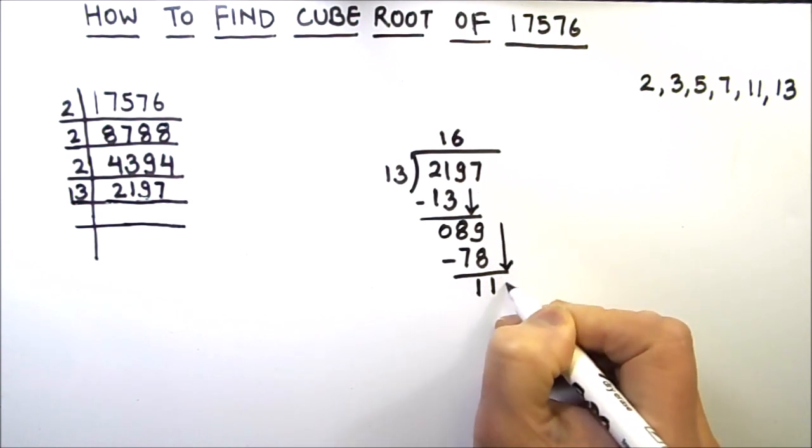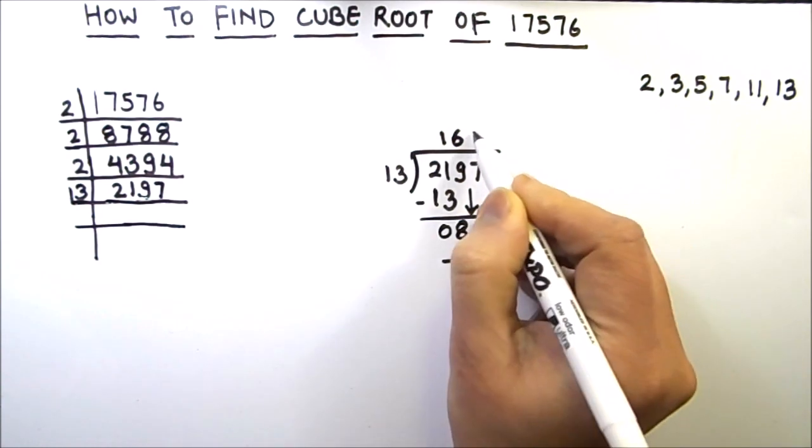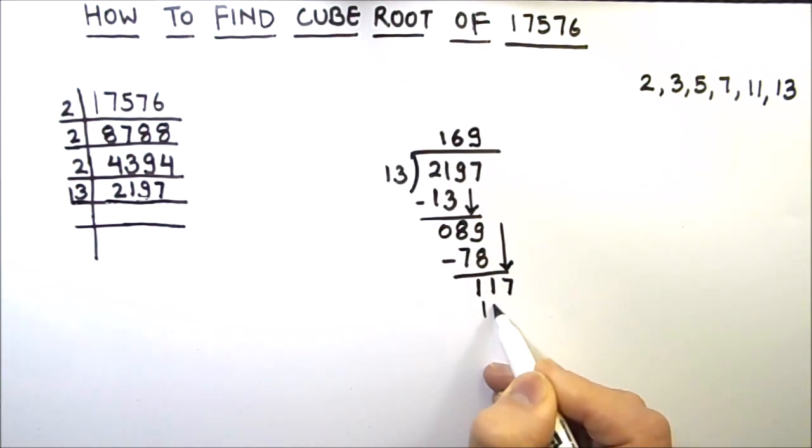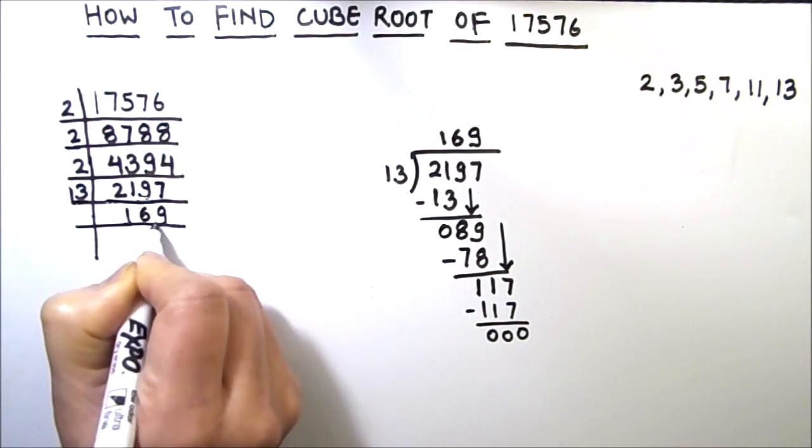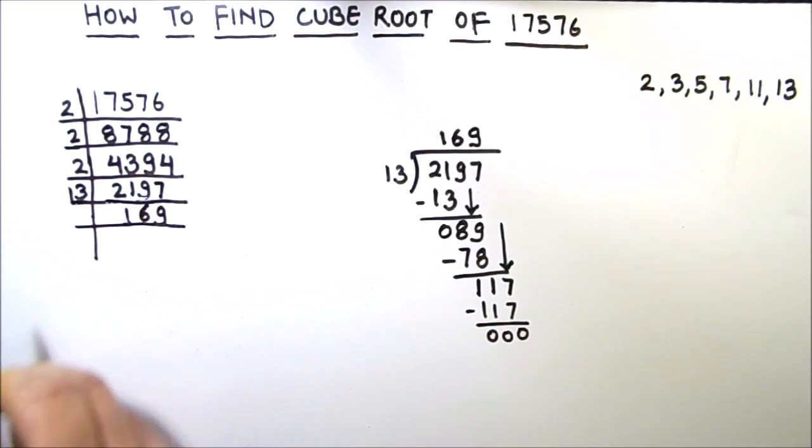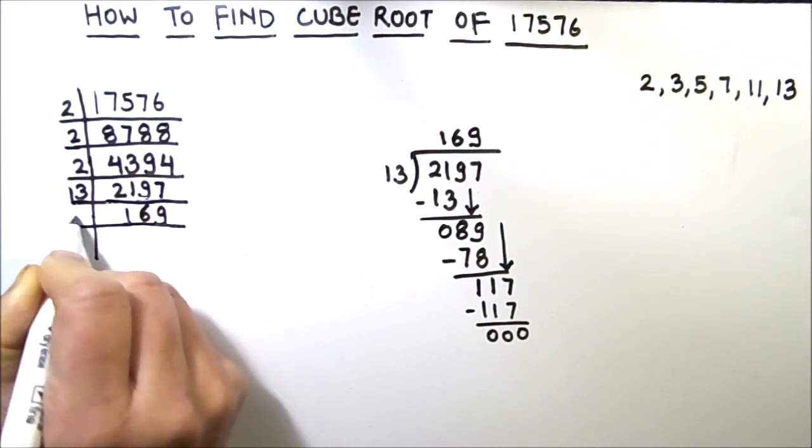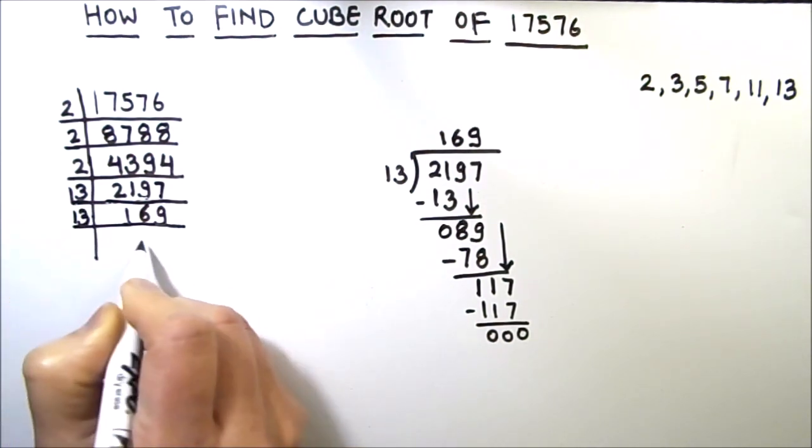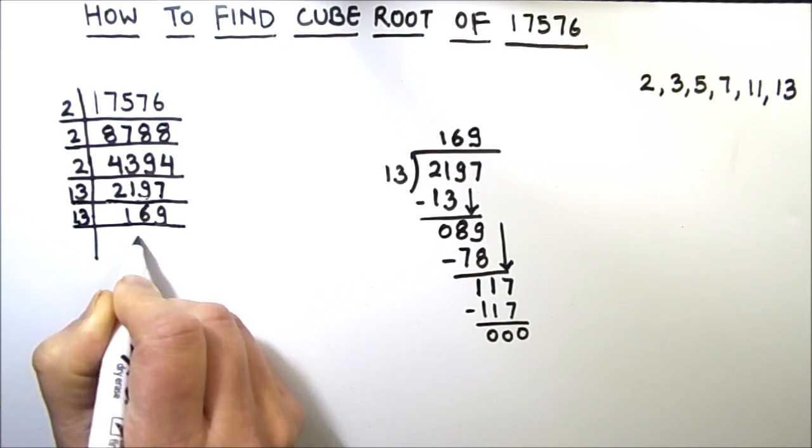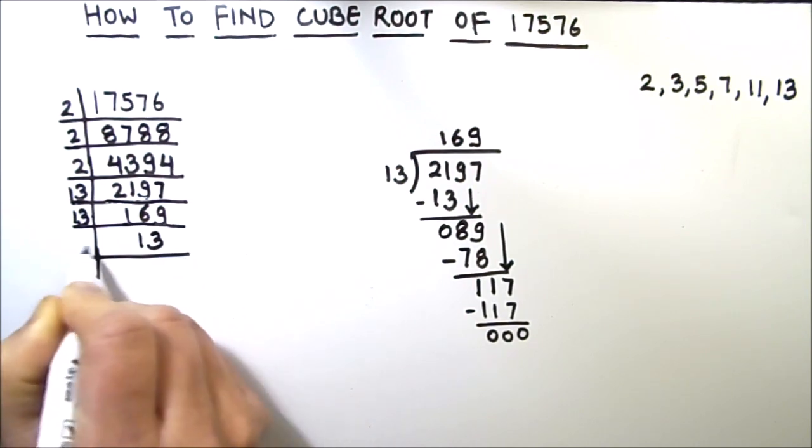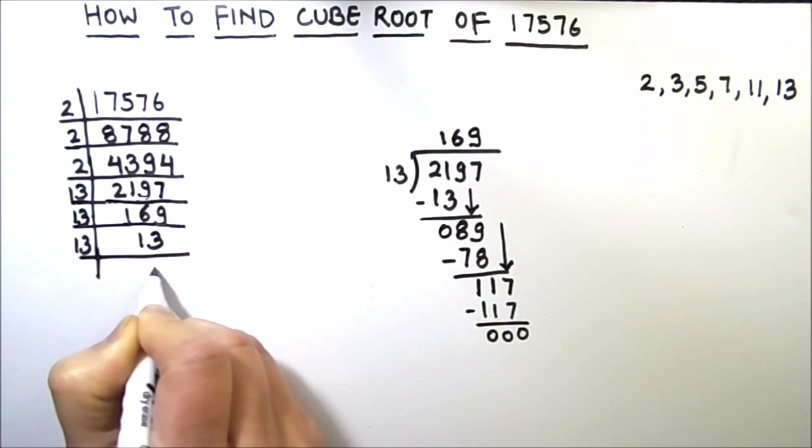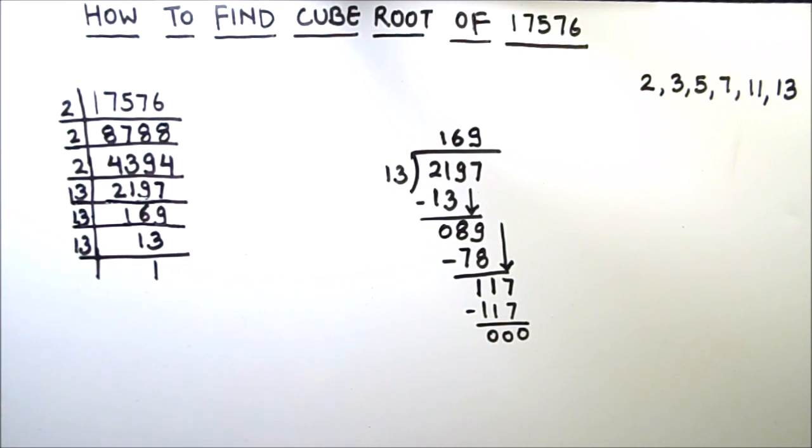Then we will drop down 7. So 13 times 9 is 117. So we got 169 by dividing it by 13. Now 169 is easily divisible by 13.